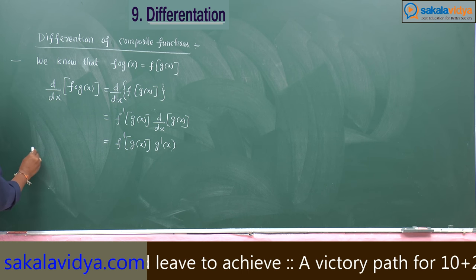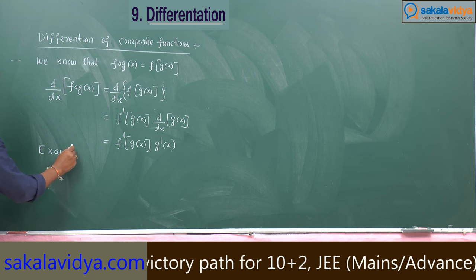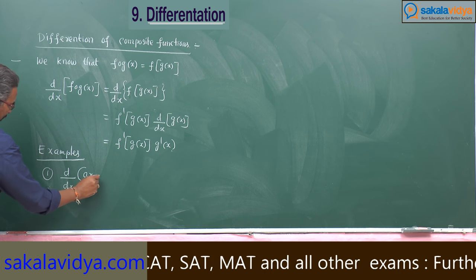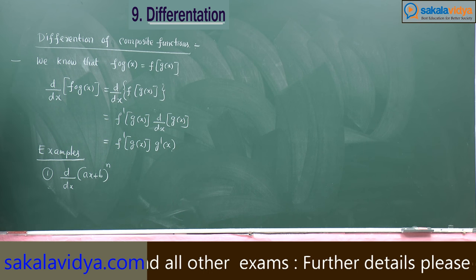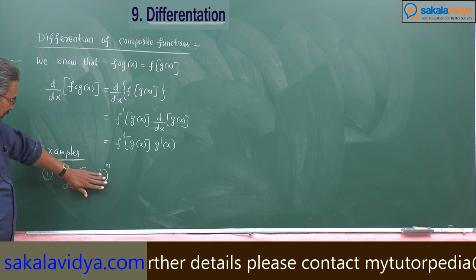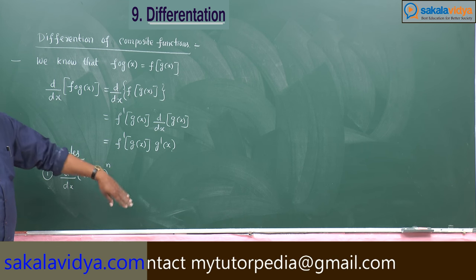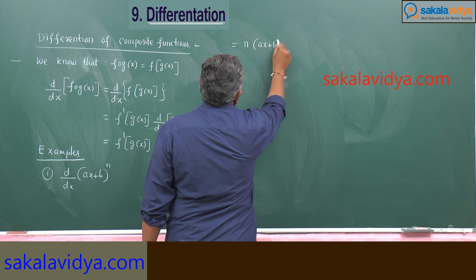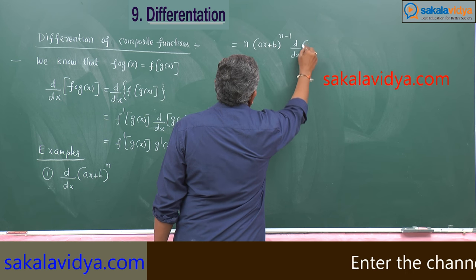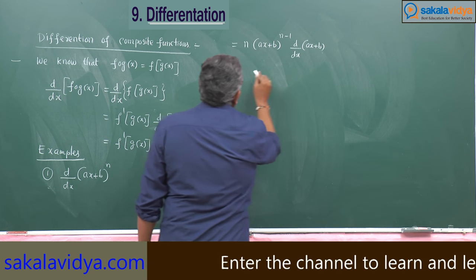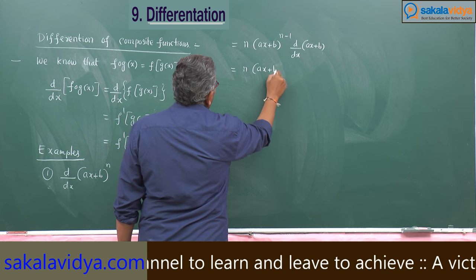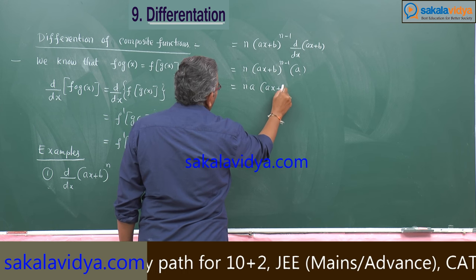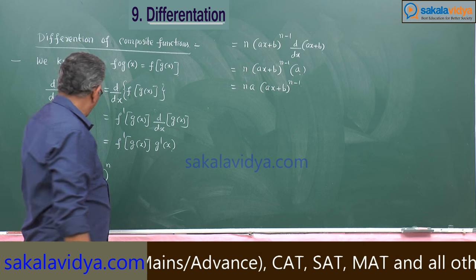Let us do some examples. Example: d/dx of (ax + b)^n. This looks like the x^n formula, where the derivative is n·x^(n−1). So we write n·(ax + b)^(n−1) into the derivative of (ax + b). The derivative of (ax + b) is a. So the answer is n·a·(ax + b)^(n−1).